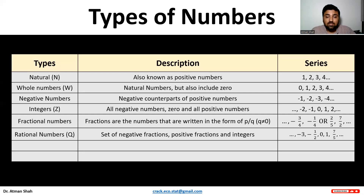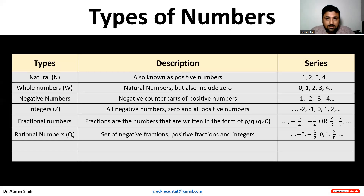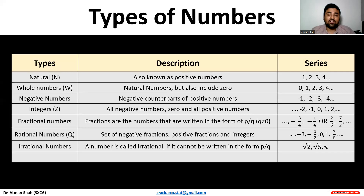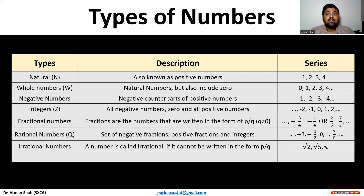Then we have rational numbers. Rational numbers include the set of negative fractions, positive fractions, and integers — for example, minus 3, minus 1 upon 2, 0, positive numbers like 1, 2, 3, and positive fractional numbers. Then we have irrational numbers. A number is called irrational if it cannot be written in the form of p upon q, that is, as a ratio. Examples include root 2, root 5, and pi — these cannot be written in the form of p upon q and are therefore irrational numbers.